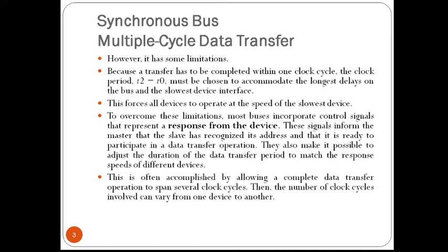Also, the processor has no way of determining whether the addressed device has actually responded. It simply assumes that at clock cycle T2 the output data have been received by the IO device or the input data are available on the data lines. If because of a malfunction the device does not respond, the error will not be detected. To overcome these limitations, most buses incorporate control signals that represent a response from the device.